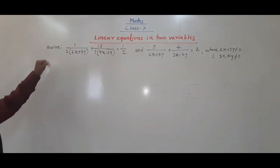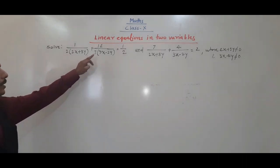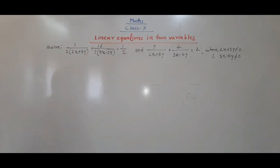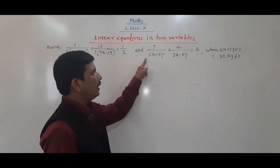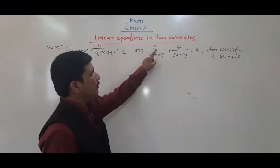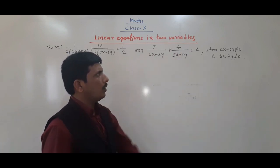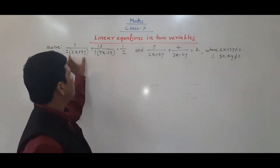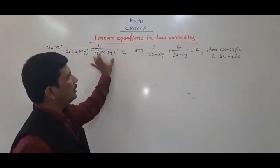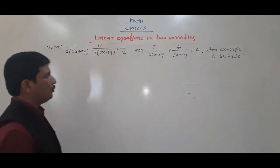See what you have to solve: 1 upon 2 into (2x + 3y) plus 2 upon 7 into (3x - 2y) is equal to 1 by 2, and 7 upon (2x + 3y) plus 4 upon (3x - 2y) is equal to 2, where 2x + 3y and 3x - 2y are not equal to 0. The denominator should not be equal to 0.